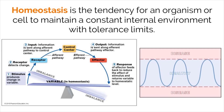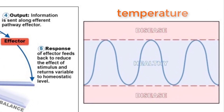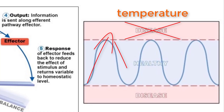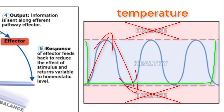Homeostasis is the tendency for an organism or cell to maintain a constant internal environment. This does not mean that everything in our body needs to be static, but it does mean that our internal environment needs to be kept within tolerance limits for everything to function properly. Take this simple example of temperature: if our body gets too hot, our cells and enzymes start to break down and cannot function properly. On the other end, being too cold will also lead to cell malfunctioning and death. To remain healthy, we have to stay within a temperature threshold that is defined by our tolerance limits.